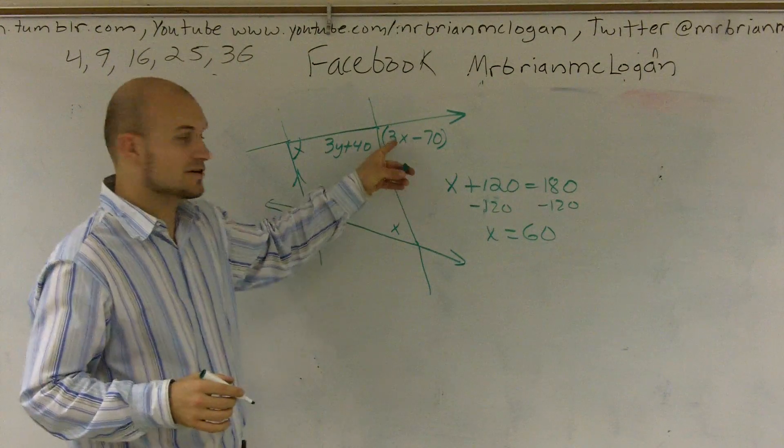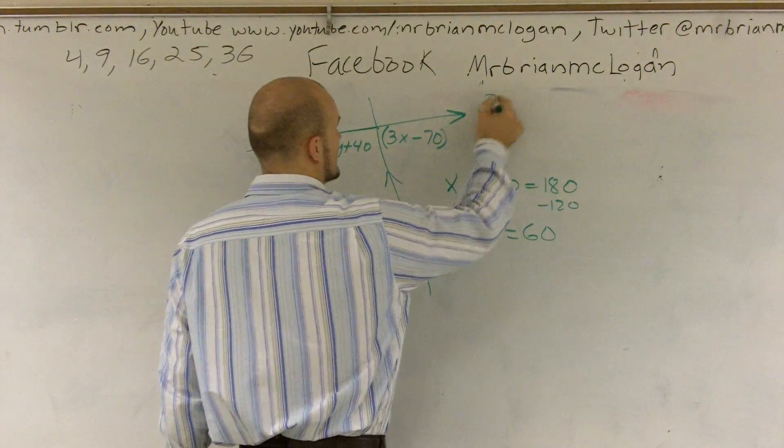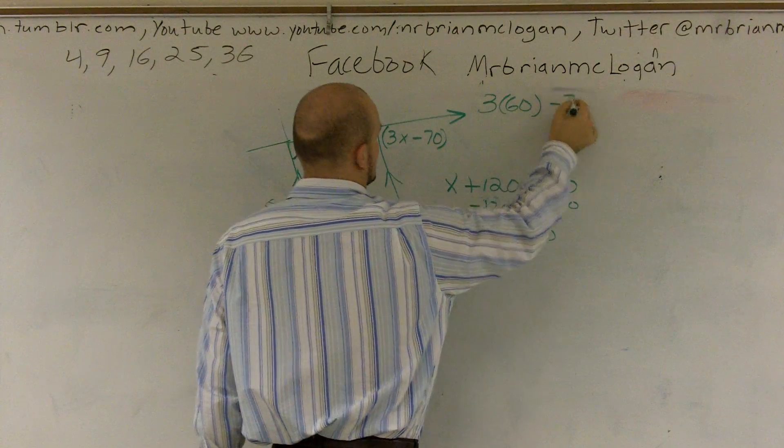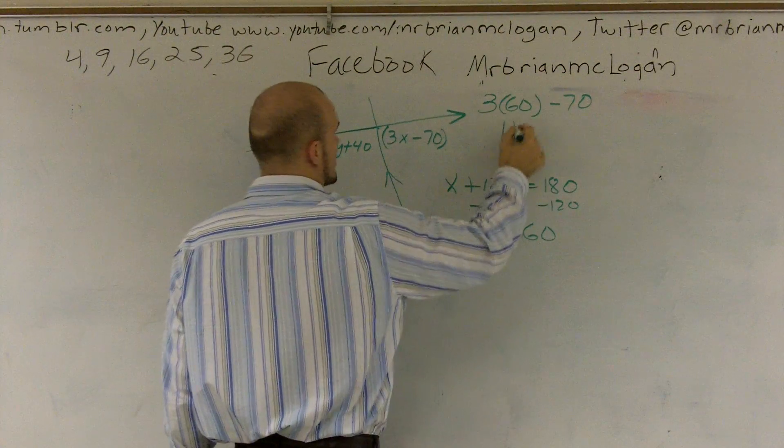Now I can figure out what this angle is by plugging 60 in for x. So 3 times 60 minus 70. 3 times 60 is 180. Minus 70 is 110.